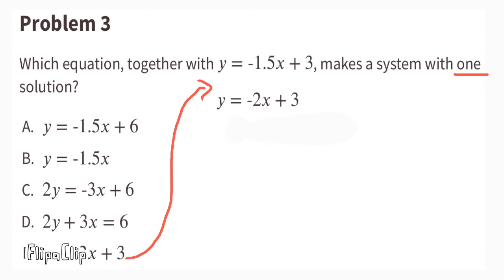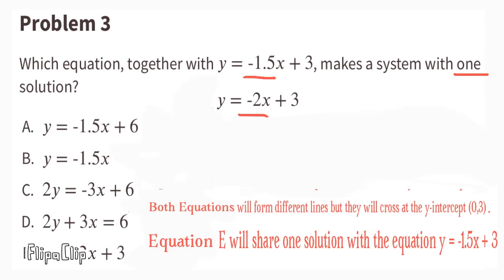Equation E: y equals negative 2x plus 3. The slope is different than the original equation, but the y-intercept is the same. Both equations will form different lines, but they will cross at the y-intercept (0, 3) because they share the same y-intercept. Equation E will share one solution with the equation y equals negative 1.5x plus 3.